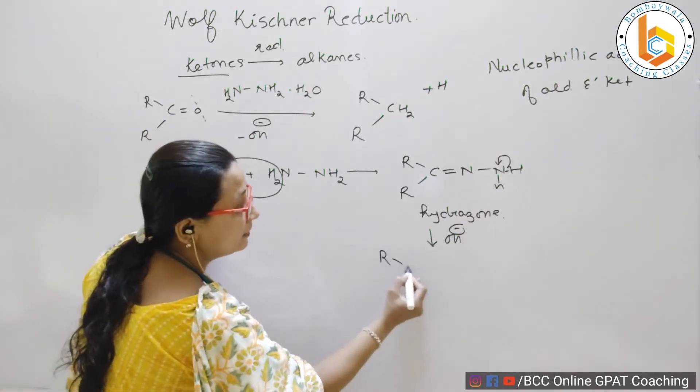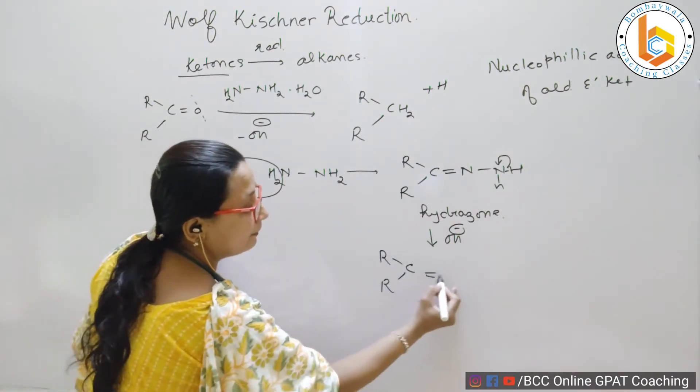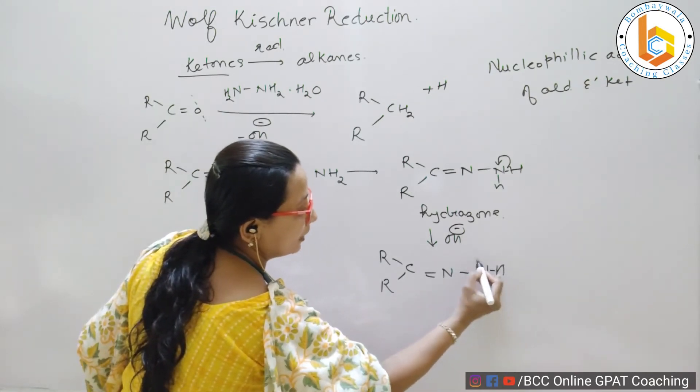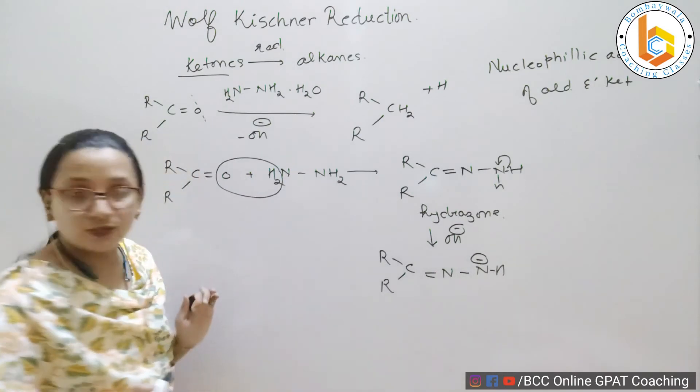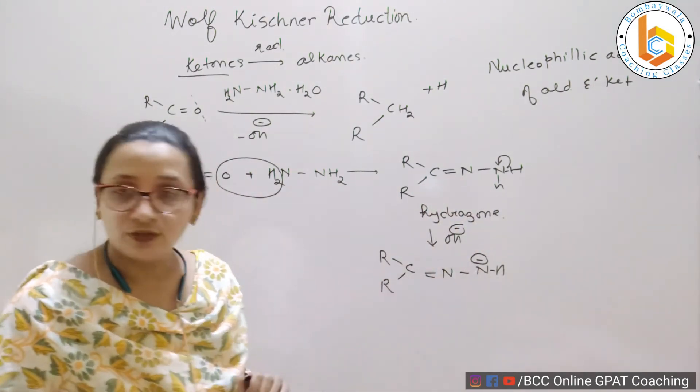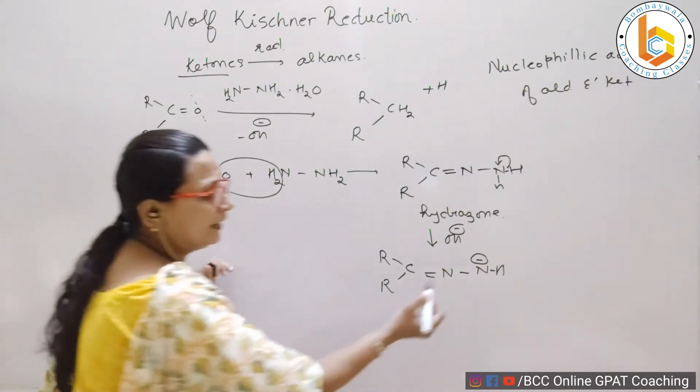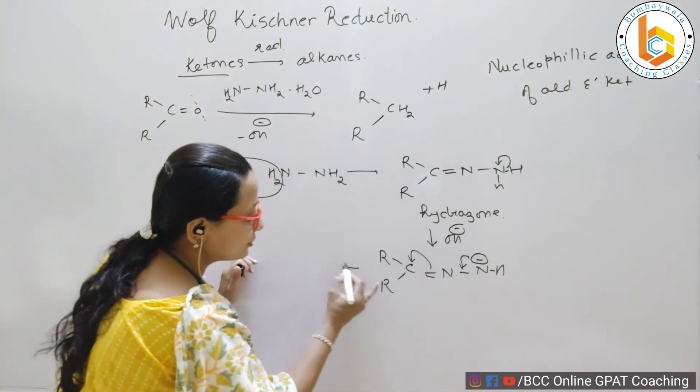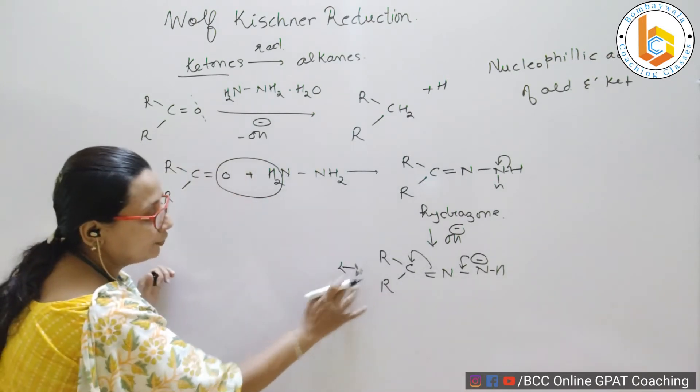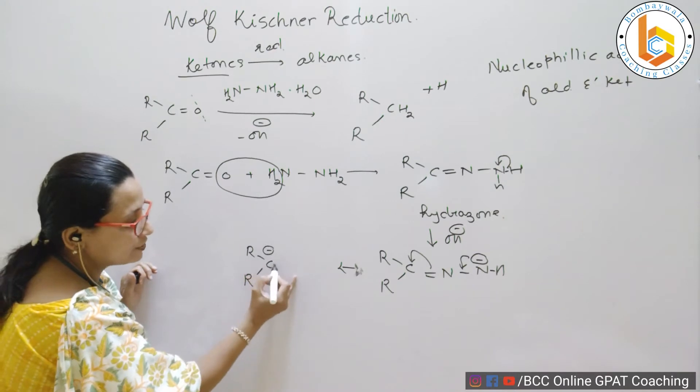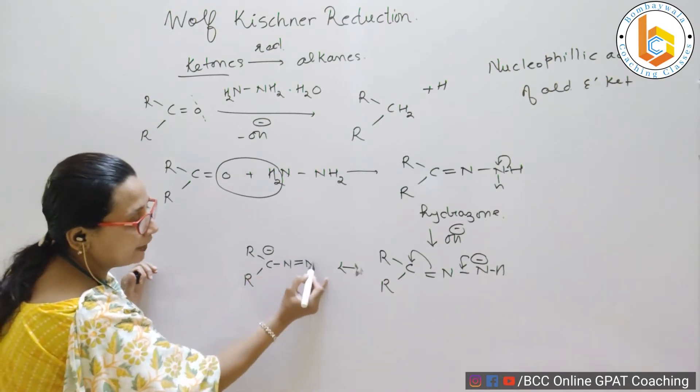So, what do I get? RCR double bond N, single bond N with a proton again there and a negative charge. This one proton is there, right? So, one proton is there and there is a negative charge. Now, what happens? Negative charge goes to give you a double bond, double bond goes to give you a negative charge and what do you get? RCR with a negative charge, single bond N, double bond N and H.